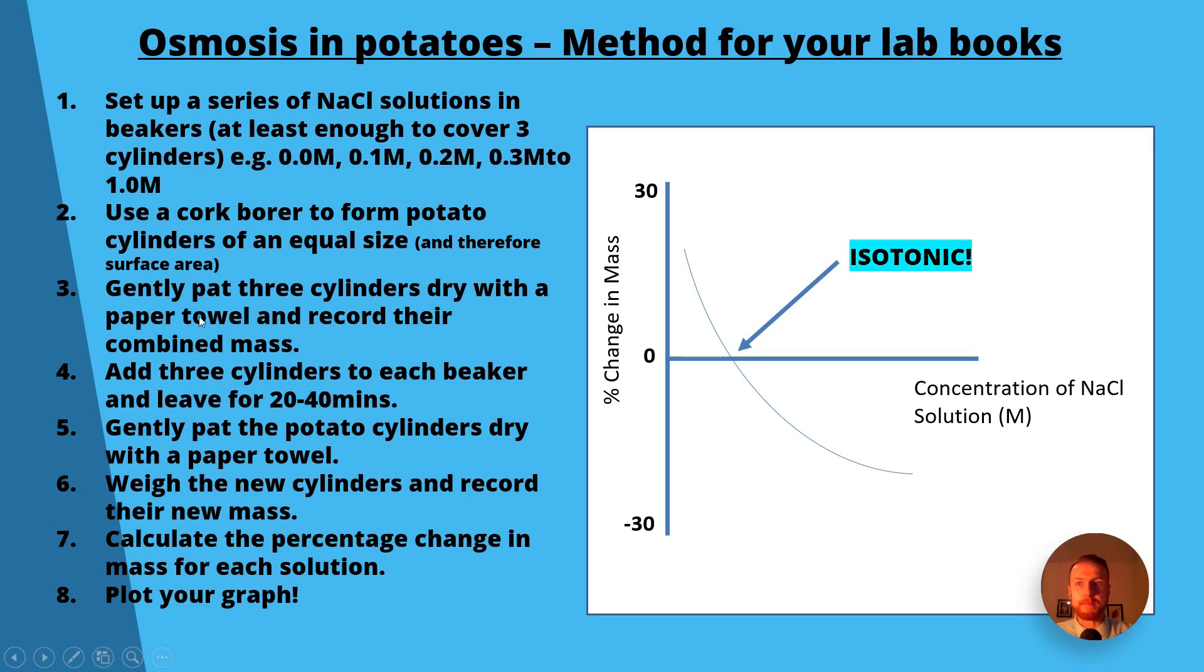So this is the method that you need to know about for required practical 3. You need to set up a series of sodium chloride solutions in beakers with at least enough to cover around three cylinders. An example of that could be zero molar, 0.1 molar, 0.2 molar, 0.3, and you can keep going up in 0.1 molar increments until you reach one molar. You've got to make sure that they're an equal size to control surface area, because we know the increase in the surface area will increase the rate of transport. Gently pat the cylinders, don't squeeze them, because that will remove water from the cells and cause your sample to become lighter, affecting your results.